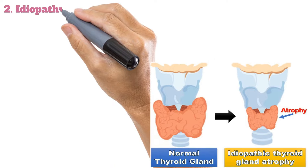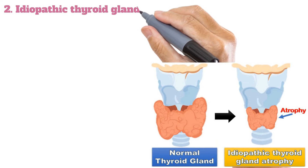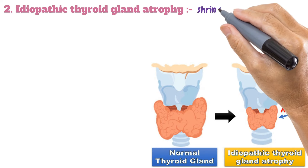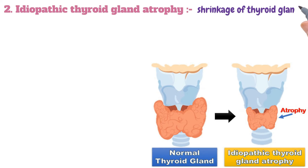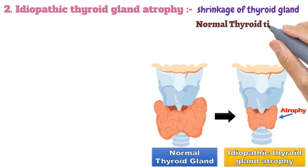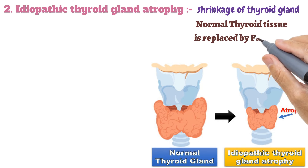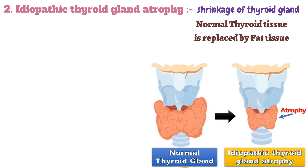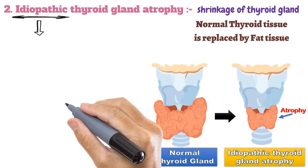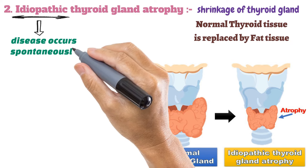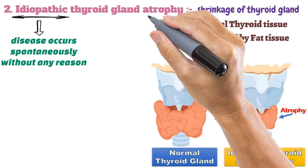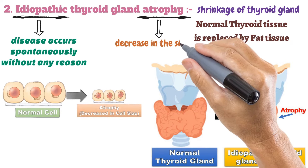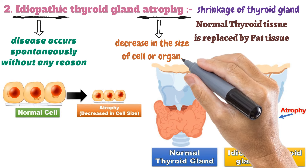The second major cause is idiopathic thyroid gland atrophy, meaning the thyroid gland shrinks and normal thyroid tissue is replaced by fat tissue. Breaking down the term: idiopathic means the disease occurs spontaneously without a known reason, and atrophy means a decrease in the size of a cell or organ.